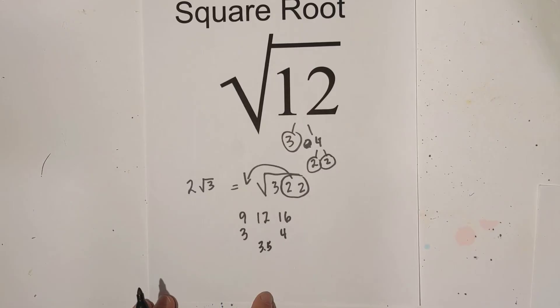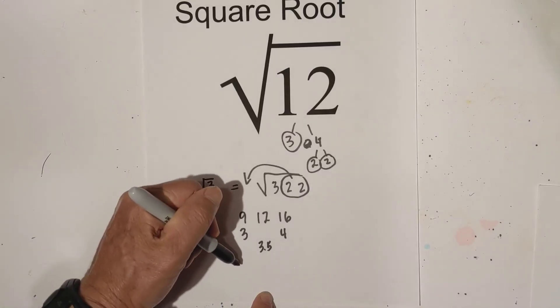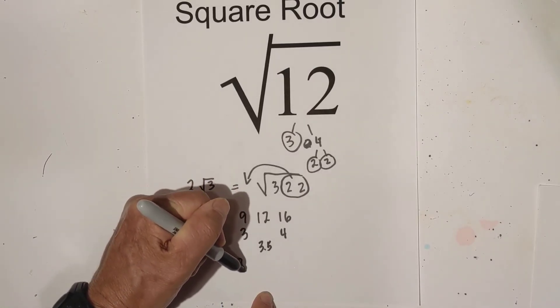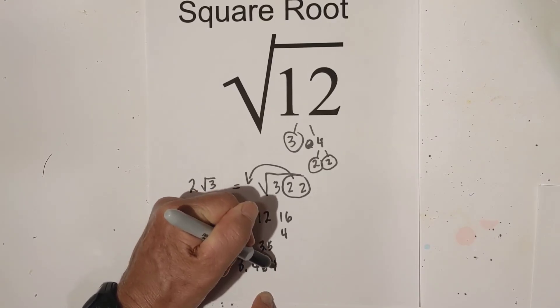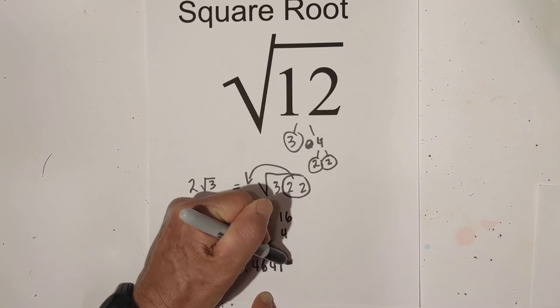Now, if you put it in the calculator and you want it to a couple of different places, it would be three point four, six, four, one, zero.